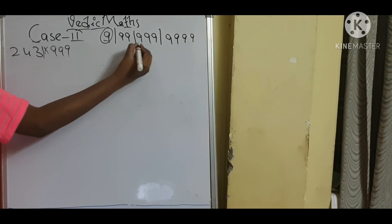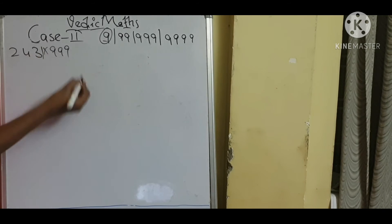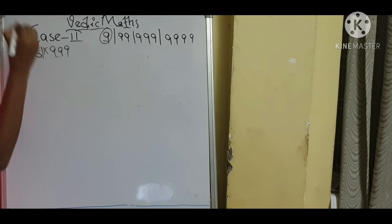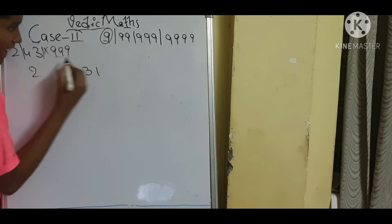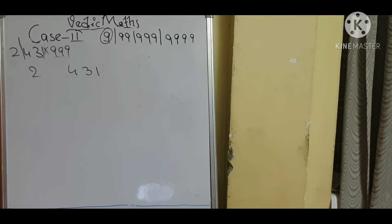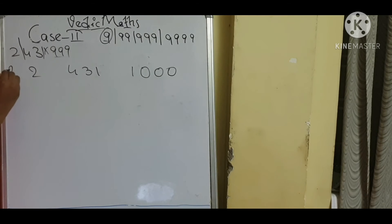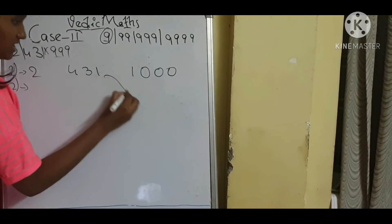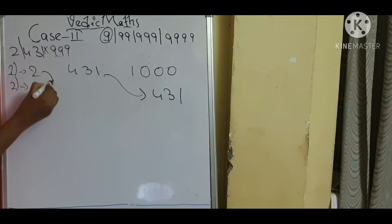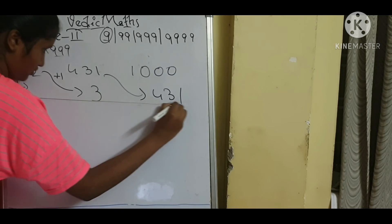Now for 999, I am taking the example of 2431 × 999. This is a three-digit number, so I am keeping a slash after three digits. Step 1: 2, 4, 3, 1, and the base of 999 is 1000. Step 2: as usual, 4, 3, 1, and here plus 1 — so 2 plus 1 is equal to 3.